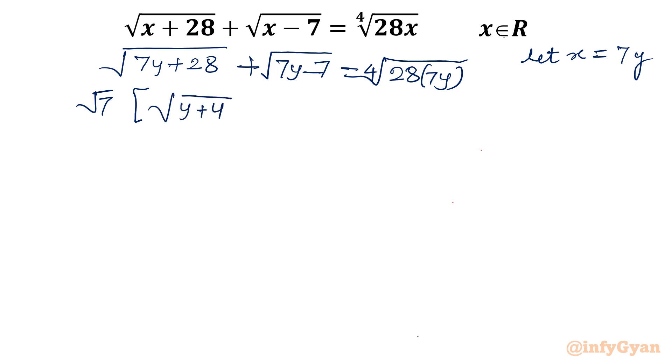Square root y plus 4 plus square root y minus 1 equal to, I can consider 7 power so root 7 would be outside. And if you will check, 4 is left inside the fourth root. So it is fourth root of 4y. Now I will cancel root 7 root 7. This equation is now free from 7 and 28. Let me write one more time: square root y plus 4 plus square root y minus 1 equal to fourth root of 4y.